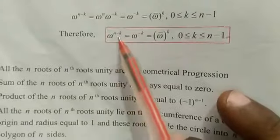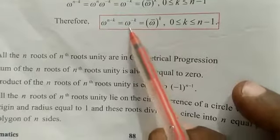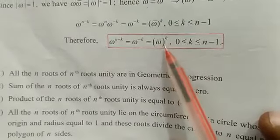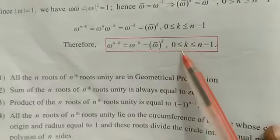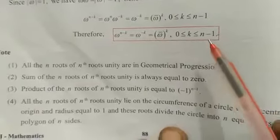Next, omega power n minus k which is equal to omega power minus k. The omega power minus k can be notation as omega bar power k, where 0 less than or equal to k less than or equal to n minus 1. This is the condition.